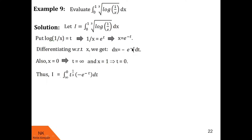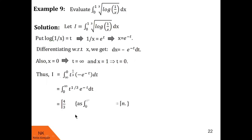We swap the two limits, giving a minus sign outside the integral. That minus sign and the minus sign from dx become plus. So we have the integral from 0 to infinity of t^(1/3) · e^(-t) dt. By the definition of gamma of n, the value of this integral is gamma(1/3 + 1), that is gamma(4/3). This gamma(4/3) can also be written as 1/3 · gamma(1/3), using the property of the gamma function which says gamma(n+1) = n · gamma(n).